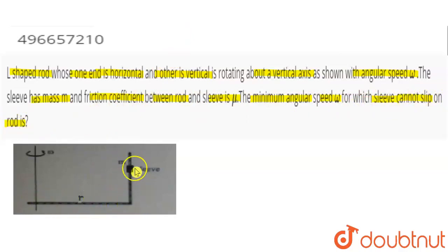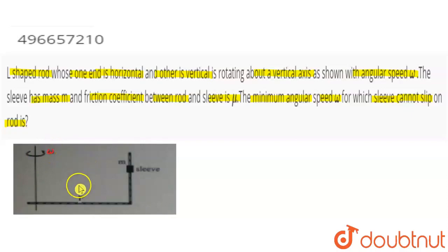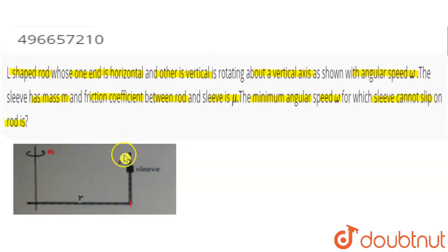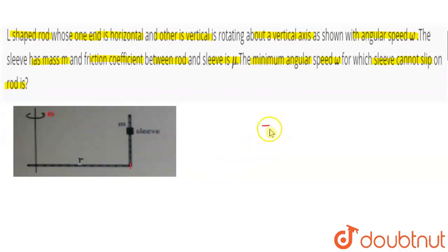So here we have an L-shaped rod — this is L-shaped. Now we have a vertical axis of rotation. The angular speed is omega. The length of the vertical part of the L-shaped rod is R, which is also the radius of rotation. Now let's look at the FBD of the sleeve and see what the forces look like.